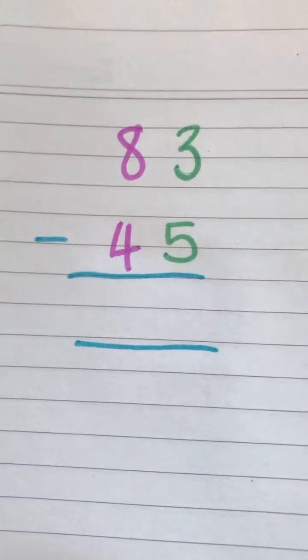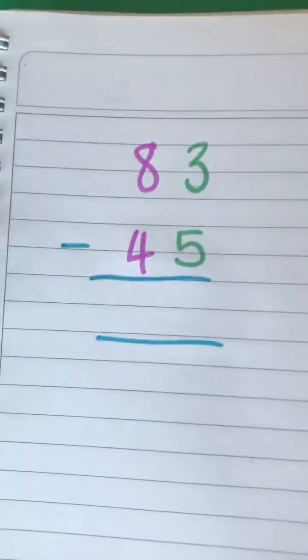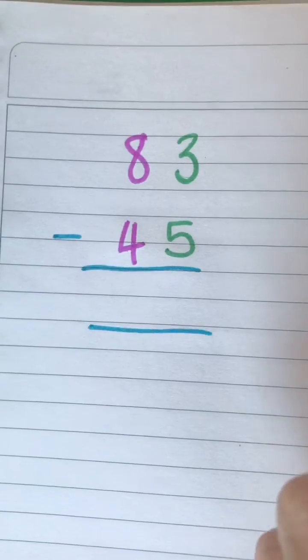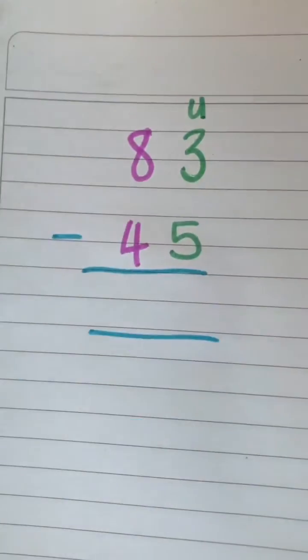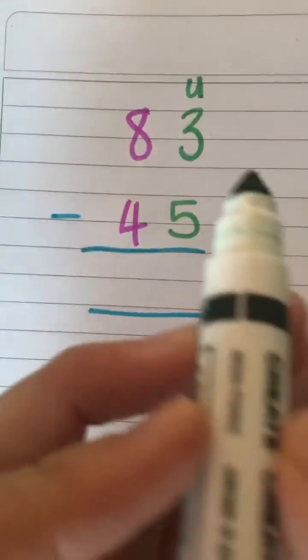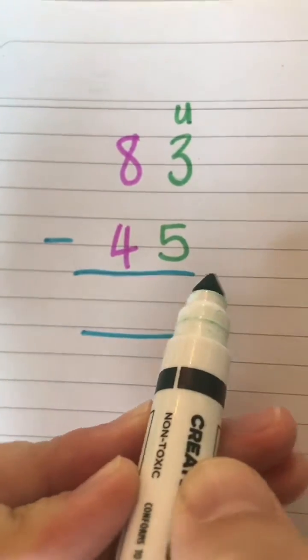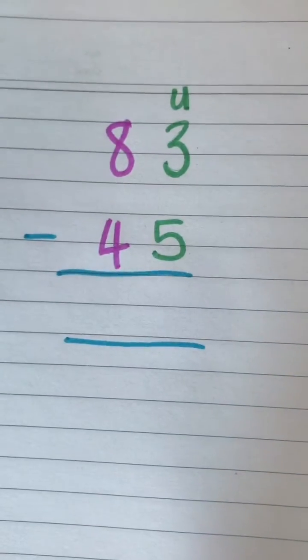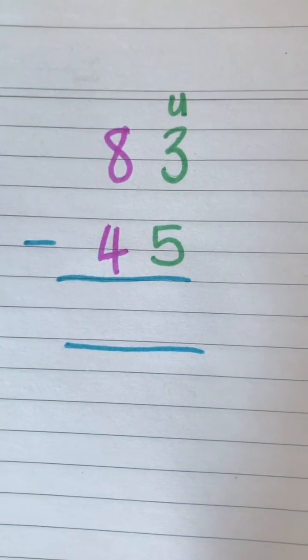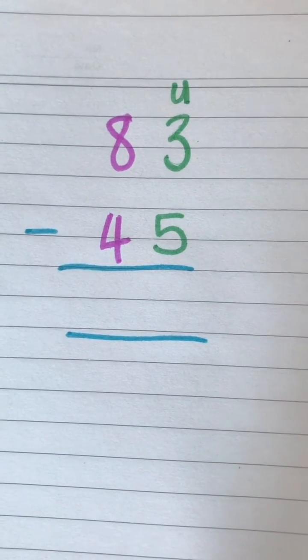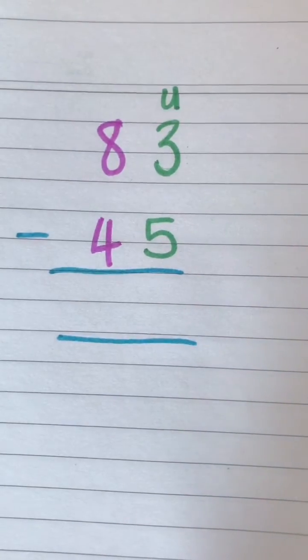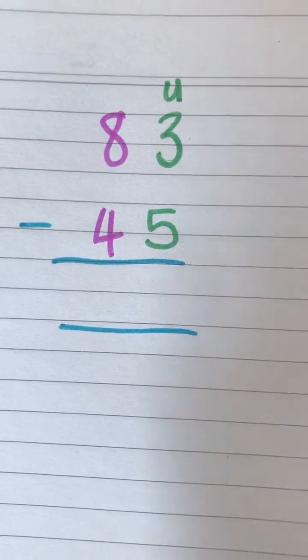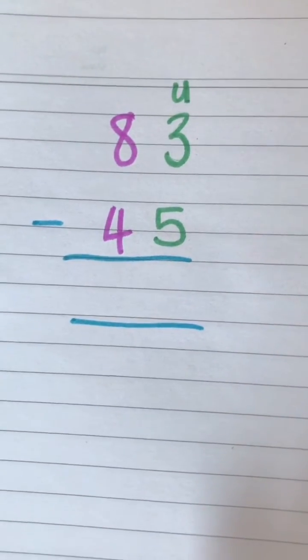have a look at our first example. So we've got over here 83 minus 45. Okay, remember we always start in our units column. So let's have a look: our sum would be 3 minus 5. Now this is where we have a bit of a problem, don't we? We can't do 3 minus 5. So if I've got 3 sweets and Simon wants 5 of my sweets, I don't have any more to give him. So what we do then is